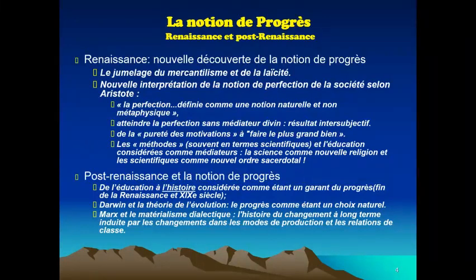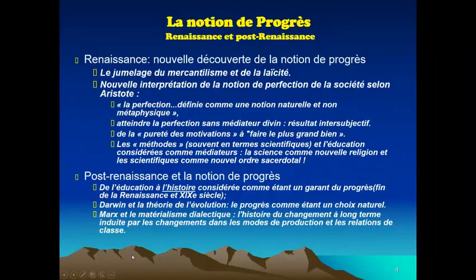De même, Marx considère aussi que l'histoire est le principal moteur de la perfection sociale. Avec l'effet historique, il y aura un changement à long terme induit par des changements dans les modes de production, les relations sociales et les relations entre les classes. Ainsi, la société va franchir des étapes et connaître une étape ultime de perfection sociale. La théorie de Marx et la théorie de Darwin deviennent donc des théories utilisées pour expliquer l'évolution des sociétés.